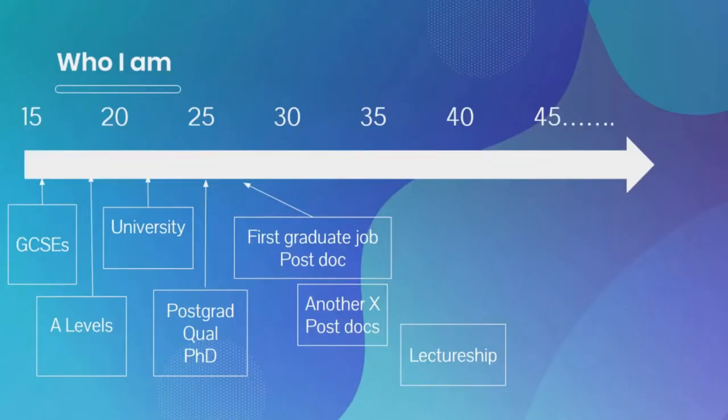This is a standard route into academia: following school education, people do a degree and a PhD, then have a series of postdocs before they finally land their first lectureship. This means that their first experiences in teaching are very distant from their first experiences of being a learner.